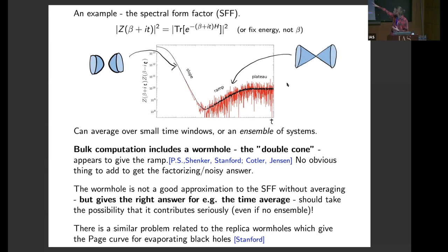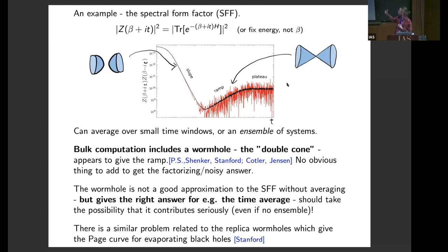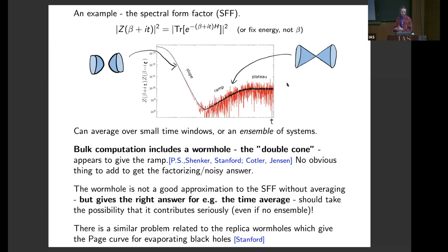Computations of the spectral form factor, because it has two copies of Z(beta + it), may include space-time wormholes linking the two boundaries. In this case, we have a wormhole called the double cone. This double cone appears to give this linear ramp in the spectral form factor. But it's not clear what we need to add to get the factorizing noisy answer, this red curve — you only appear to get this linear ramp in black. This wormhole, the double cone, is not a good approximation of the spectral form factor without averaging. But it does give the right answer for the time average, and the time average is a perfectly reasonable thing to consider computing in a theory without an ensemble. So that suggests we should take this contribution from the wormhole seriously.